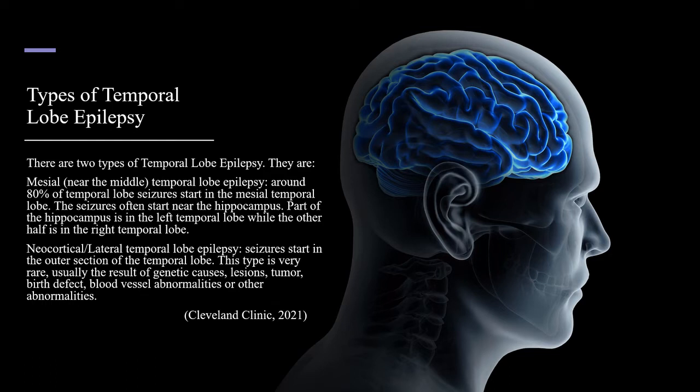The second type is neocortical or lateral temporal lobe epilepsy, where seizures start in the outer section of the temporal lobe. This type is very rare, usually the result of genetic causes, lesions, tumor, birth defect, blood vessel abnormalities, or other abnormalities.